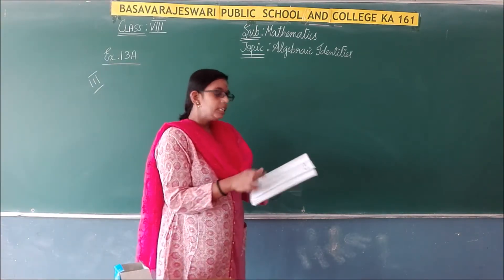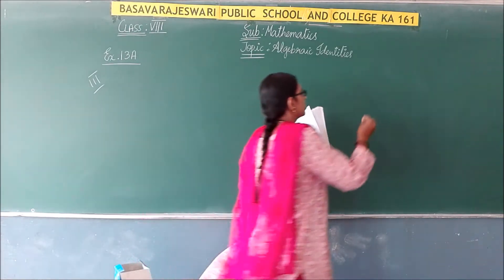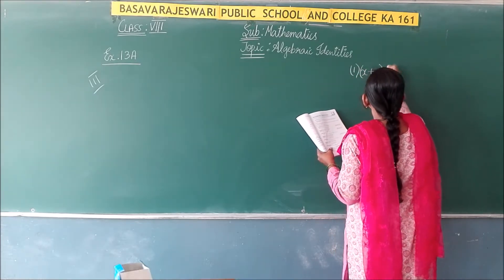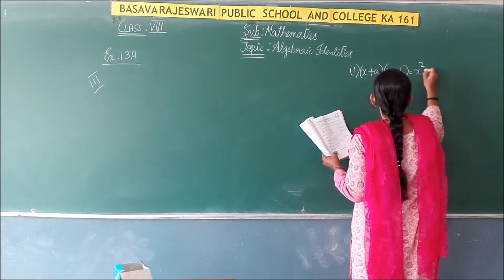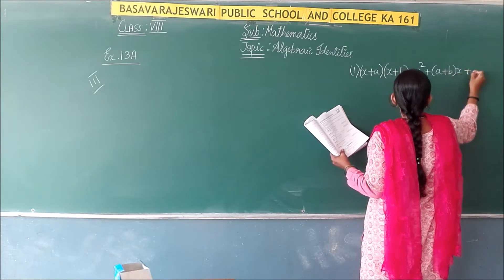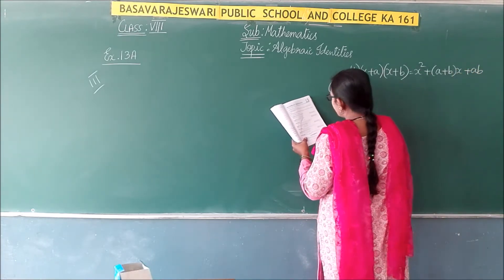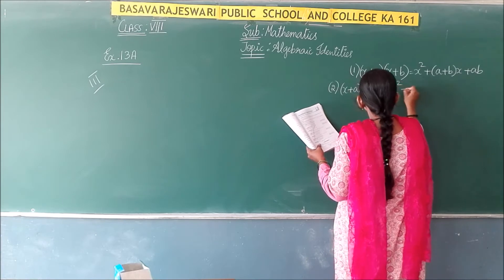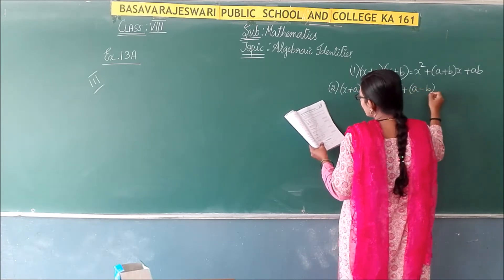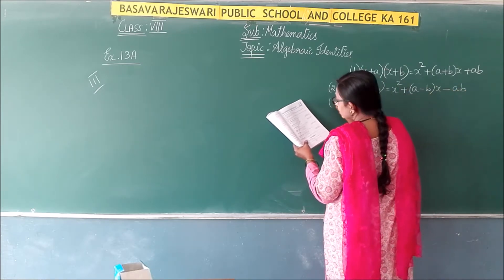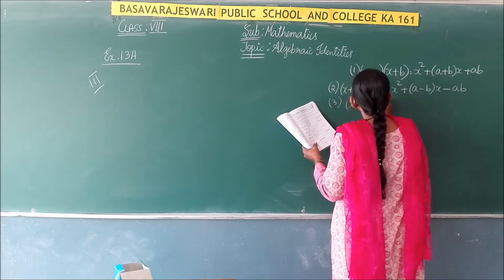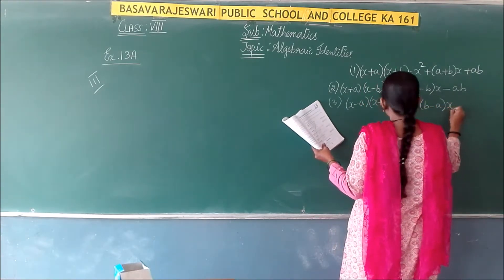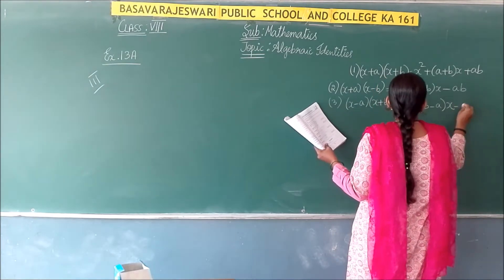Before we begin, let us list the identities we are going to use. The first identity is: (x + a)(x + b) = x² + (a + b)x + ab. The second identity is: (x + a)(x - b) = x² + (a - b)x - ab. The third identity is: (x - a)(x - b).